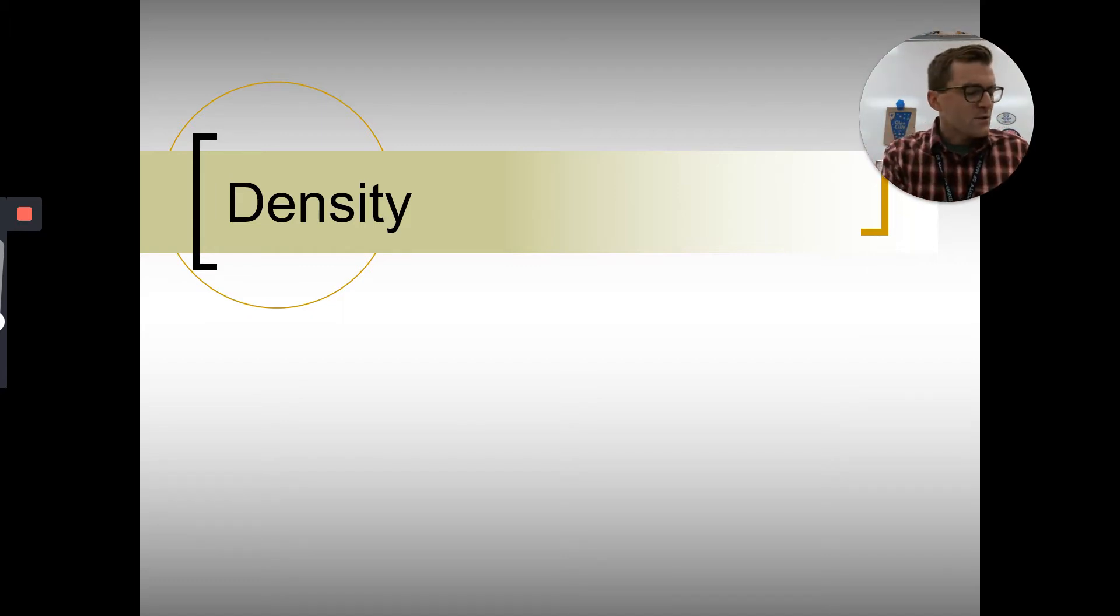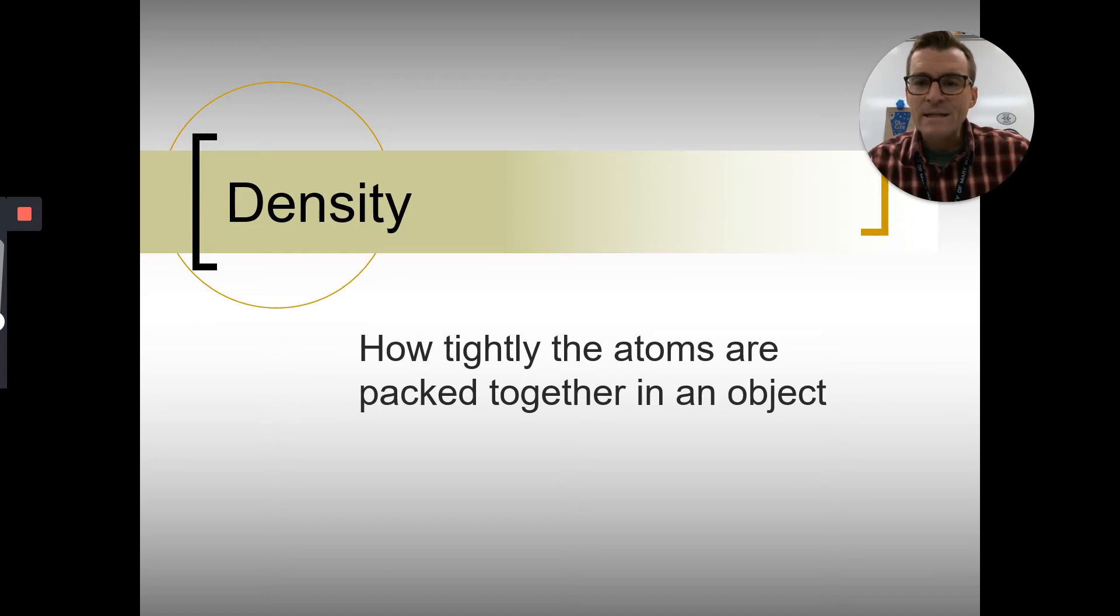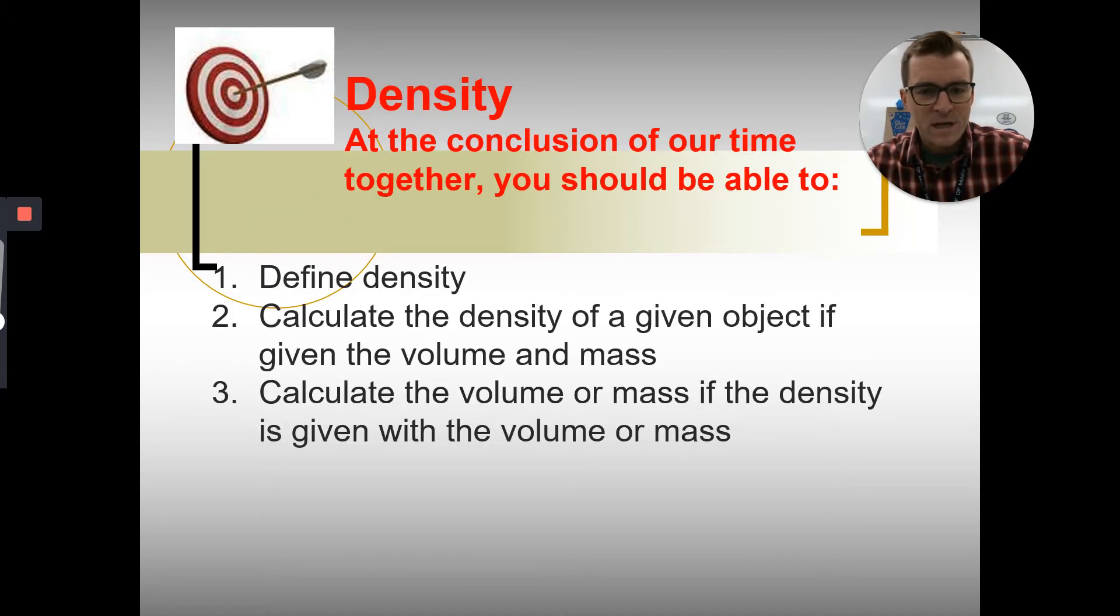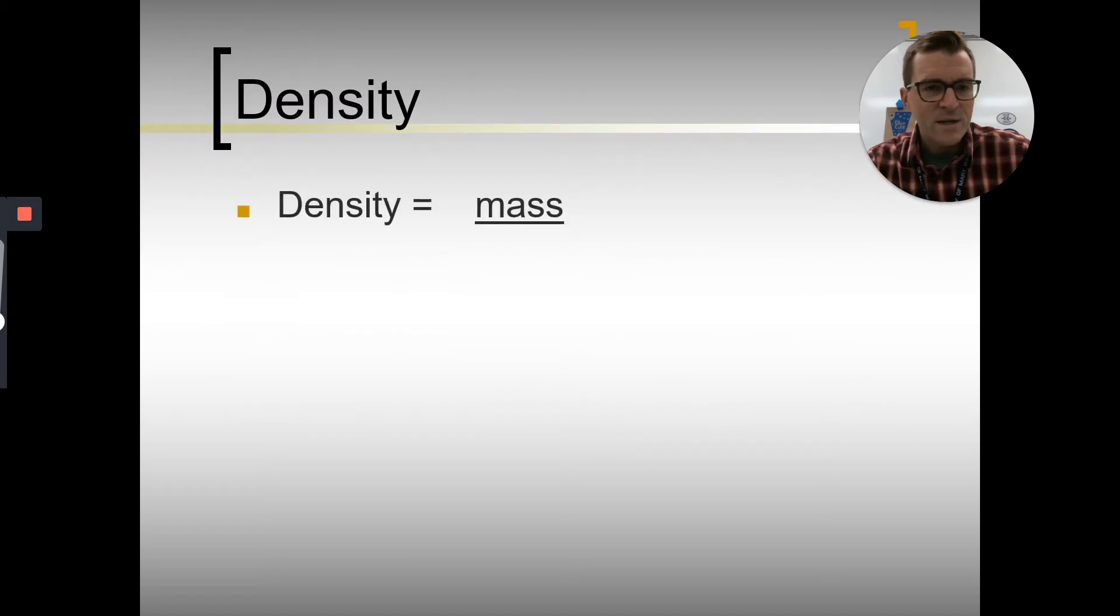So we are starting unit two by looking at some properties of matter. By now in unit two, you should have learned a little bit about our different types of matter: gas, liquid, solid, learned a little bit about their phases, as well as properties and changes. And we're going to talk again just a little bit about density. So what density is, if we had to come up with a very loose definition, it's basically how tight together atoms or molecules are packed in an object.